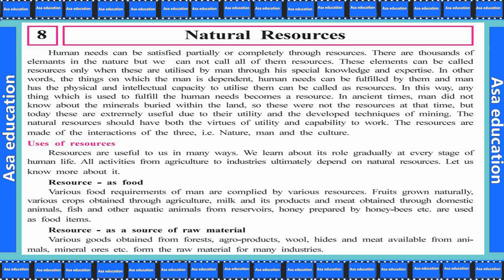As a resource of food, various food requirements of men are fulfilled by various resources. Fruits grow naturally; various crops are obtained through agriculture; milk and its products, and meat obtained through domestic animals; fish and other aquatic animals from reservoirs; and honey prepared by honeybees are all used as food items.